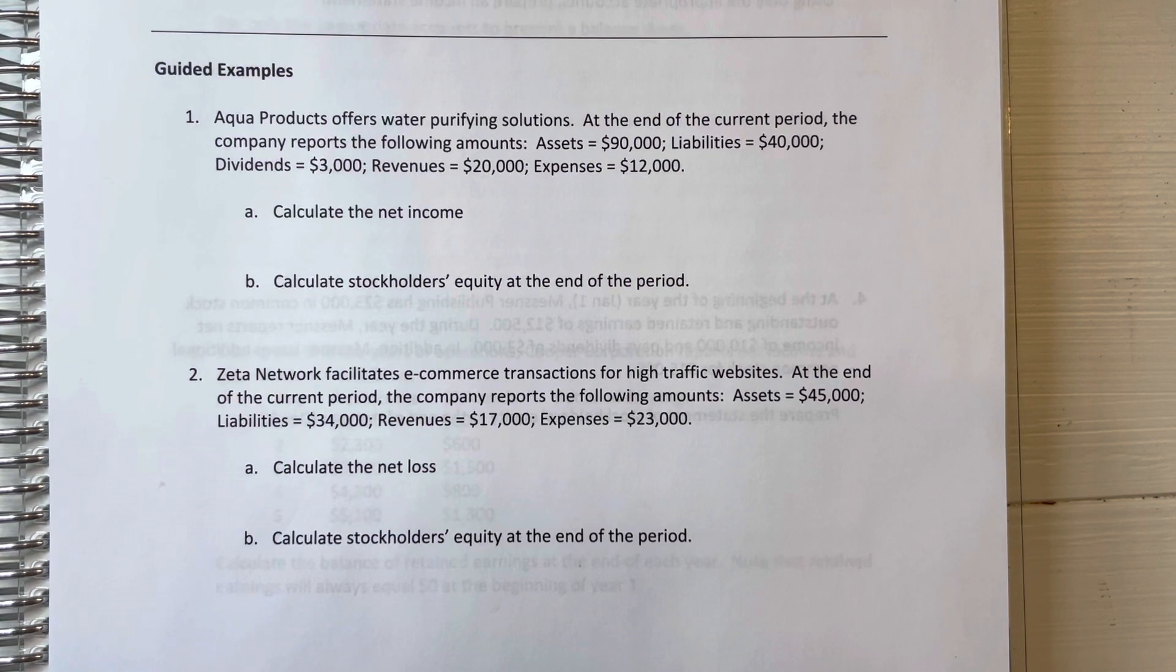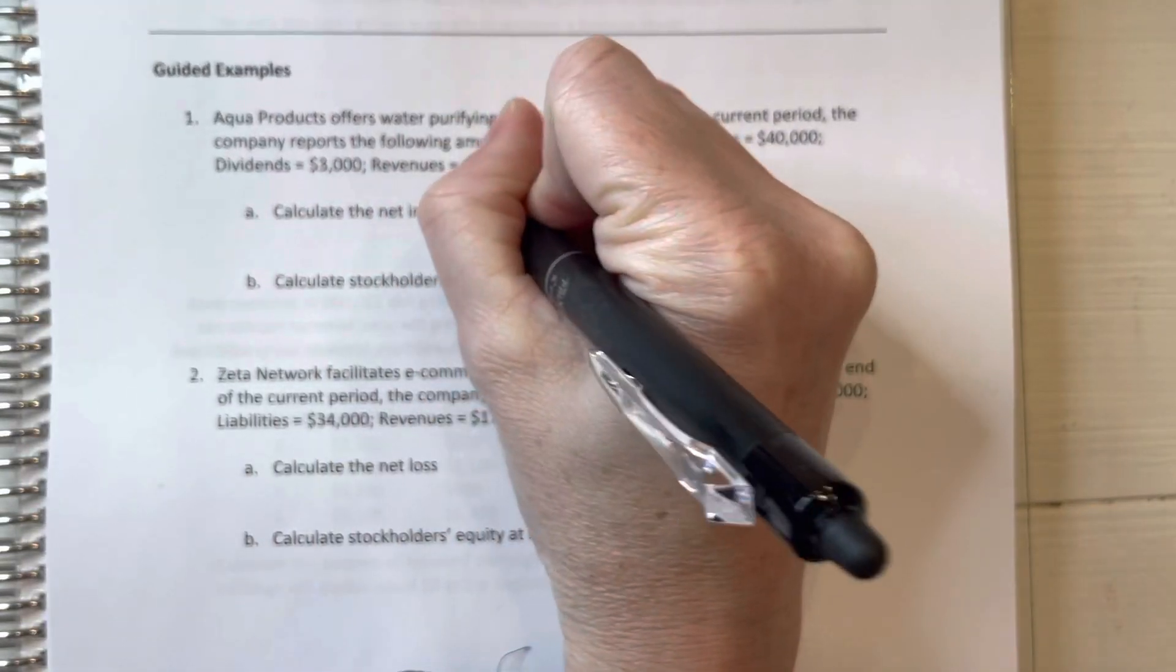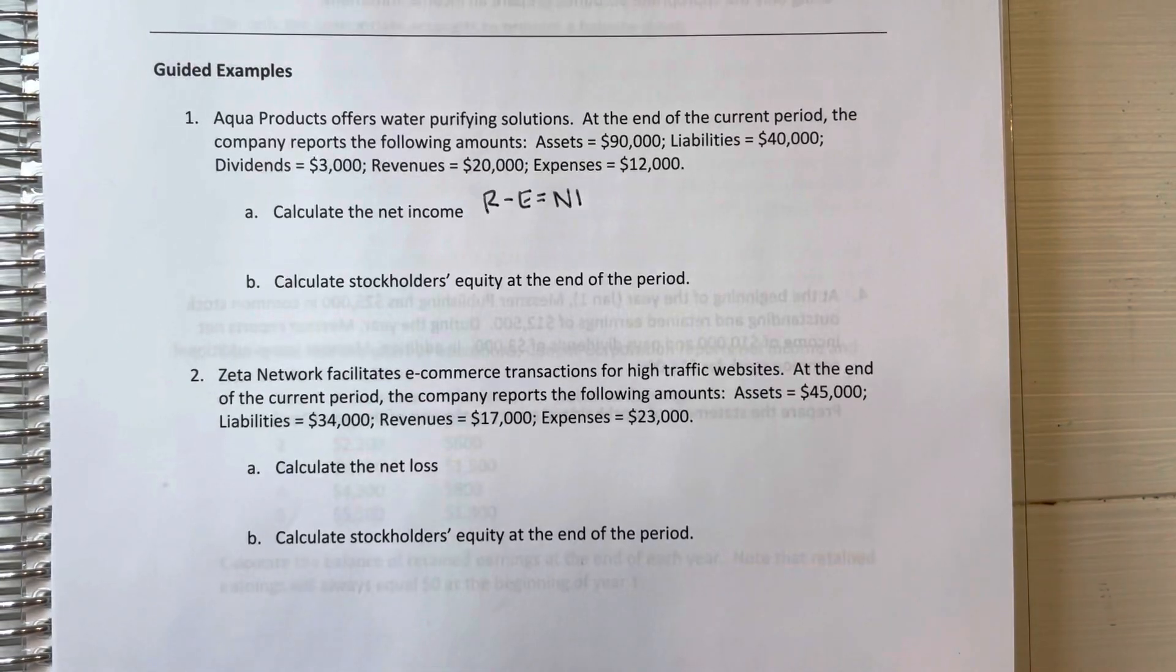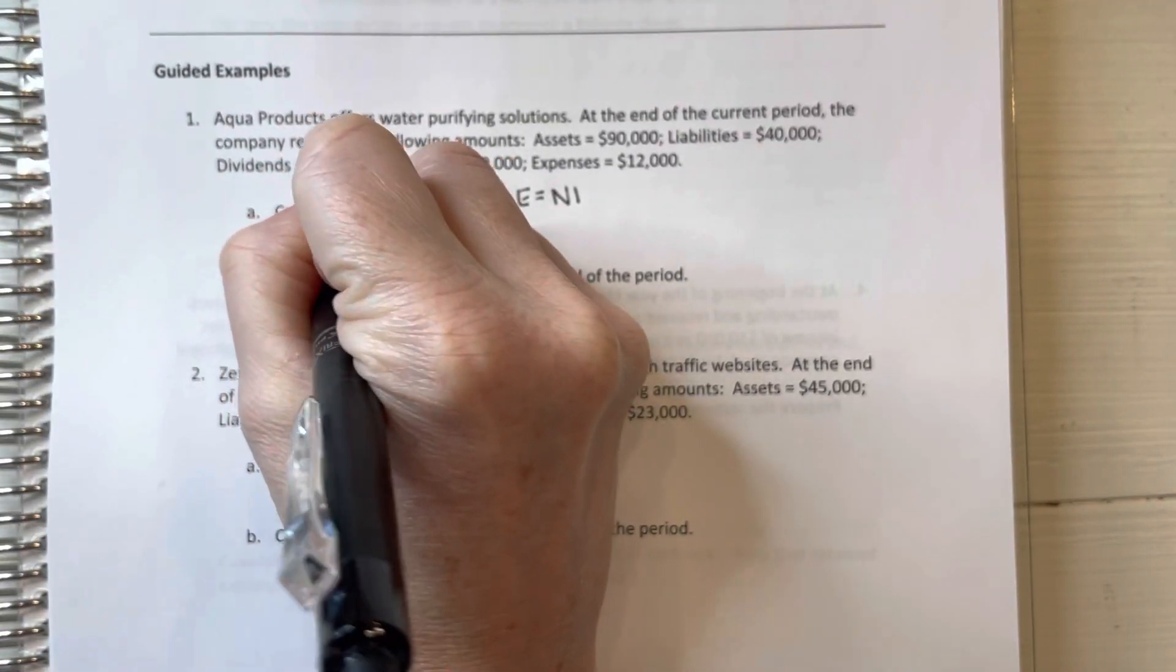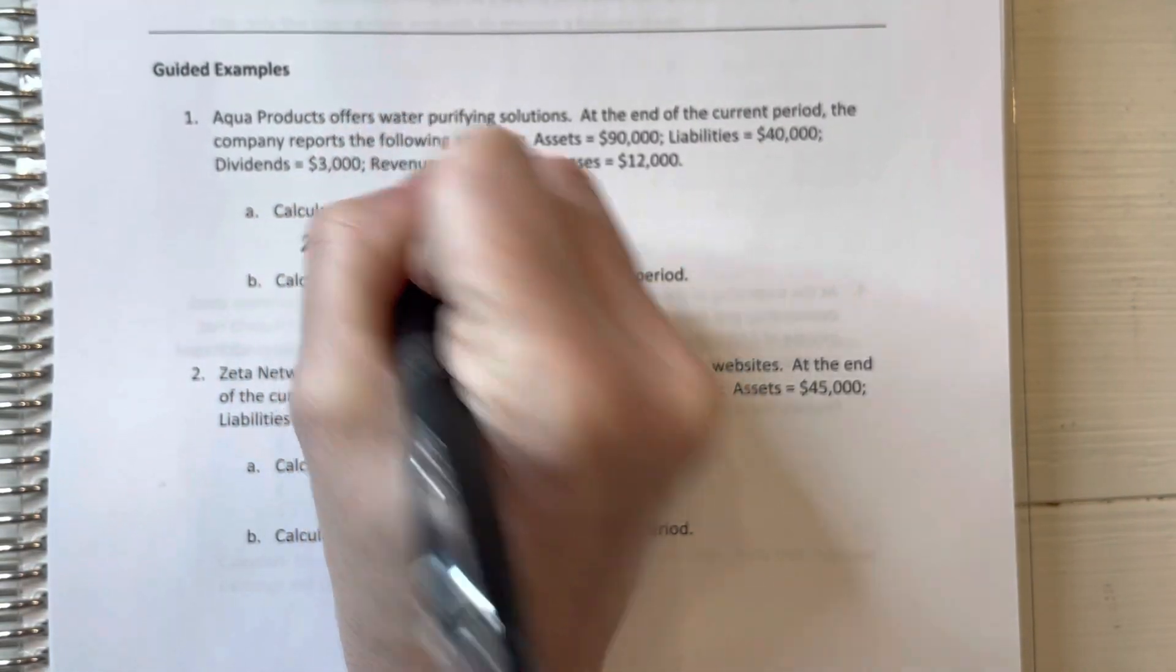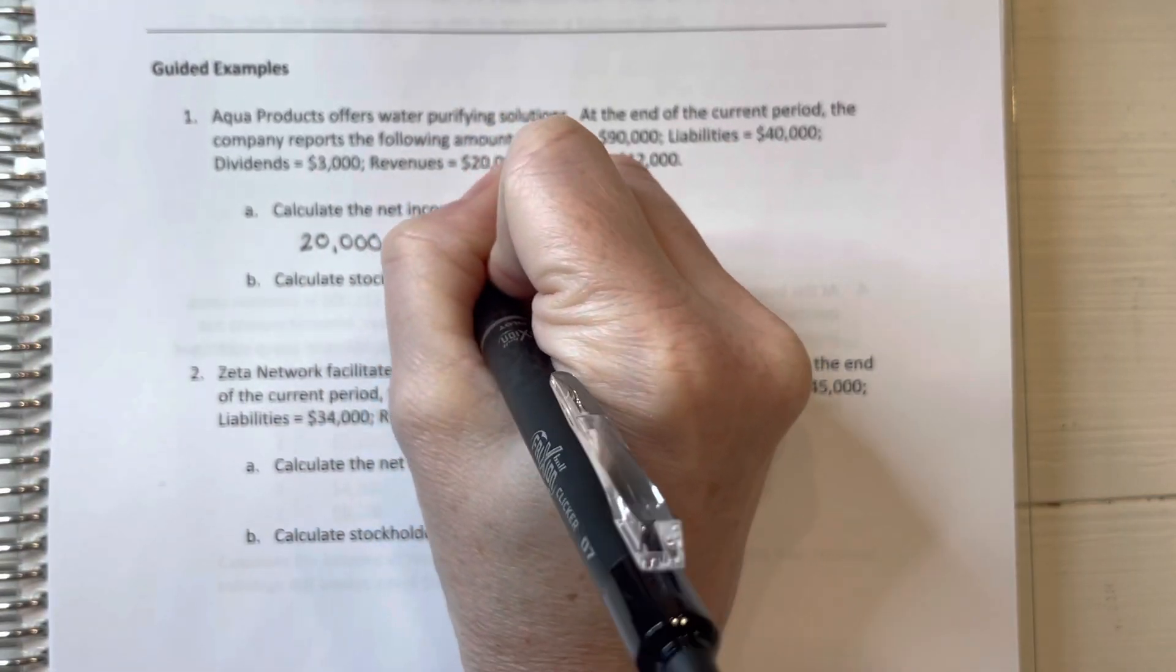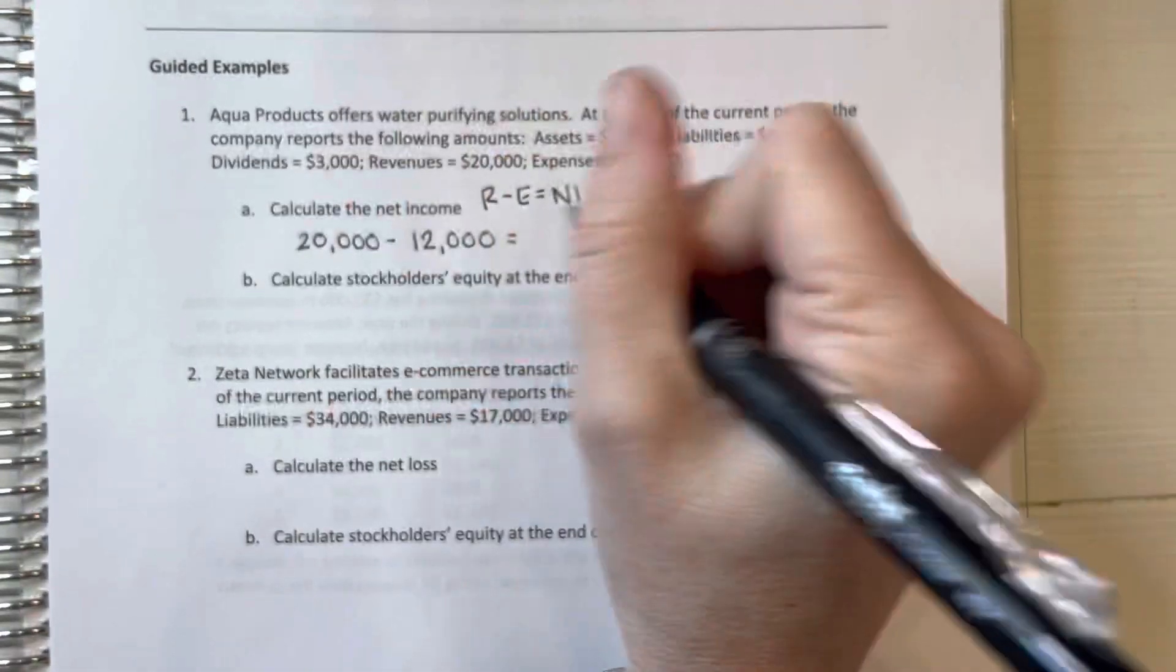The first thing we're going to do is calculate the net income. Remember with net income, we can calculate that by taking revenue minus expenses. So we can start with our revenue, $20,000. If we subtract out our expenses of $12,000, we get net income of $8,000.